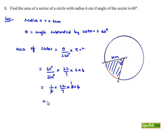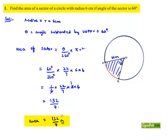That is equal to 22 times 6 is 132 divided by 7. Therefore the area of required sector here is equal to 132 by 7 centimeter square. That's the solution.